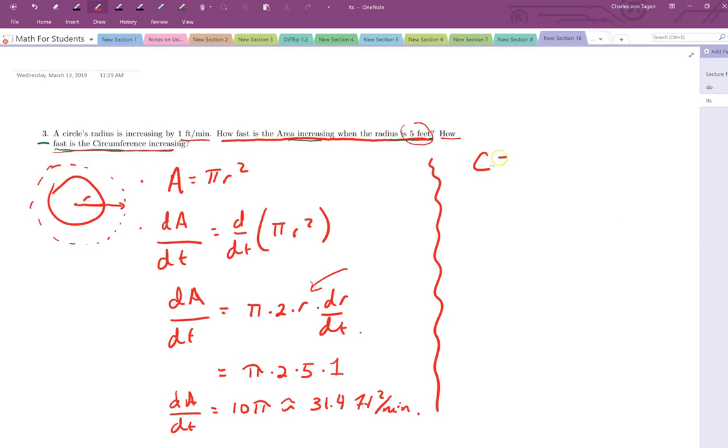Well, the formula for the circumference of a circle is 2 pi r. Implicitly differentiating both sides gives us that dC/dt is equal to 2 pi dr/dt. So that tells us that dC/dt, what we're after, the rate of change of the circumference of the circle, is equal to 2 pi times 1.